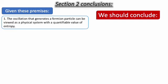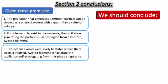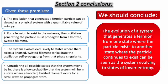And with that, we are ready to prove our second conclusion. Given these premises: One, the oscillation that generates a fermion particle can be viewed as a physical system with a quantifiable value of entropy. Two, for a fermion to exist in the universe, the oscillation generating the particle must propagate from a knotted, twisted filament. Three, the system evolves exclusively to states where there exists a knotted, twisted filament to facilitate the oscillation self-propagating from that phase singularity. And four, considering all possible states the system might be in, there is a low probability that the system will be in a state where a knotted, twisted filament exists for a scroll wave to propagate from. We should conclude that the evolution of a system that generates a fermion from one state where the particle exists to another state where the particle continues to exist can be seen as a system evolving to states of lower entropy.